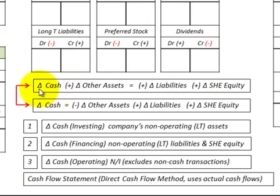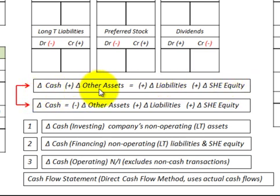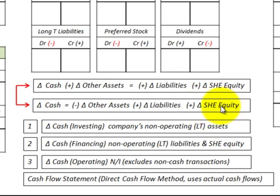For our assets, we'd have the change in cash plus all other assets equal our change in liabilities plus our change in stockholders equity. What I've done here is moved the change in other assets over to the other side of the equation. So what we have is: change in cash equals minus the change in all other assets, plus the change in liabilities, plus the change in stockholders equity.